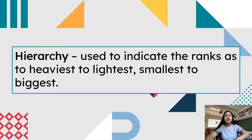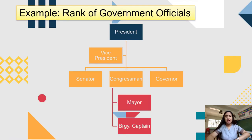Let us now talk about hierarchy. Hierarchy is used to indicate ranks, such as heaviest to lightest or smallest to biggest. You can use the rank of government officials as an example: from president to vice president, senator, congressman, governor, and mayor and barangay captain.